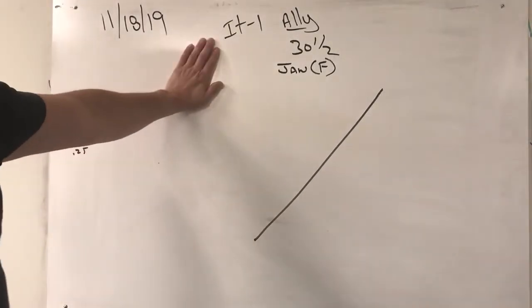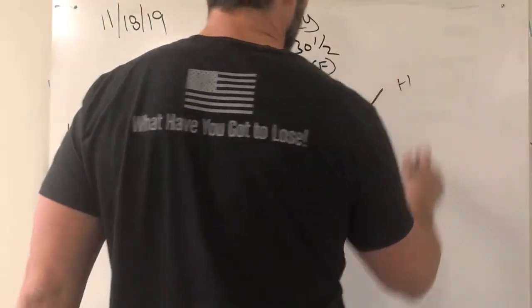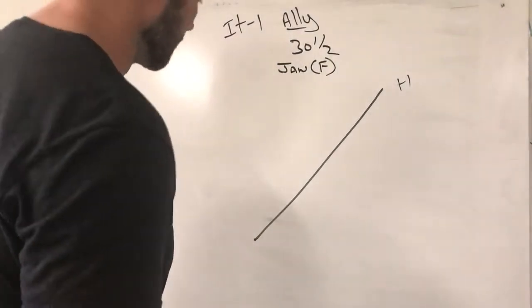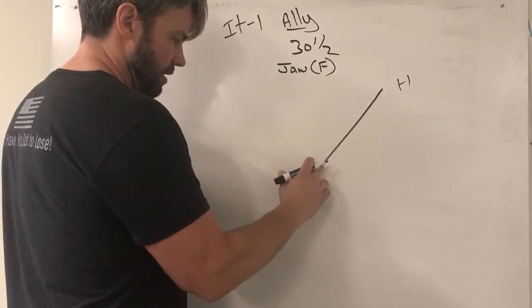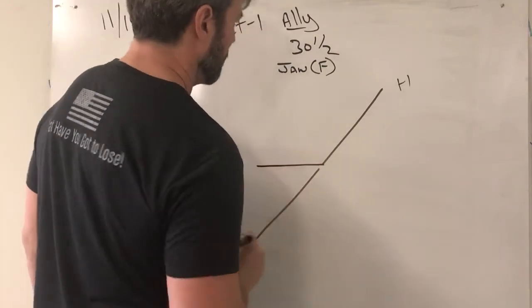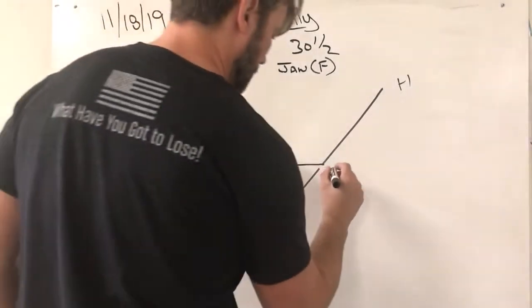Anyways, IT1 wanted to create a positive one stock position in this stock Ally trading 30 and a half dollars and this is again in January. So what I'm gonna do is I'm gonna draw a small gap here, and we are gonna buy the 31 call.